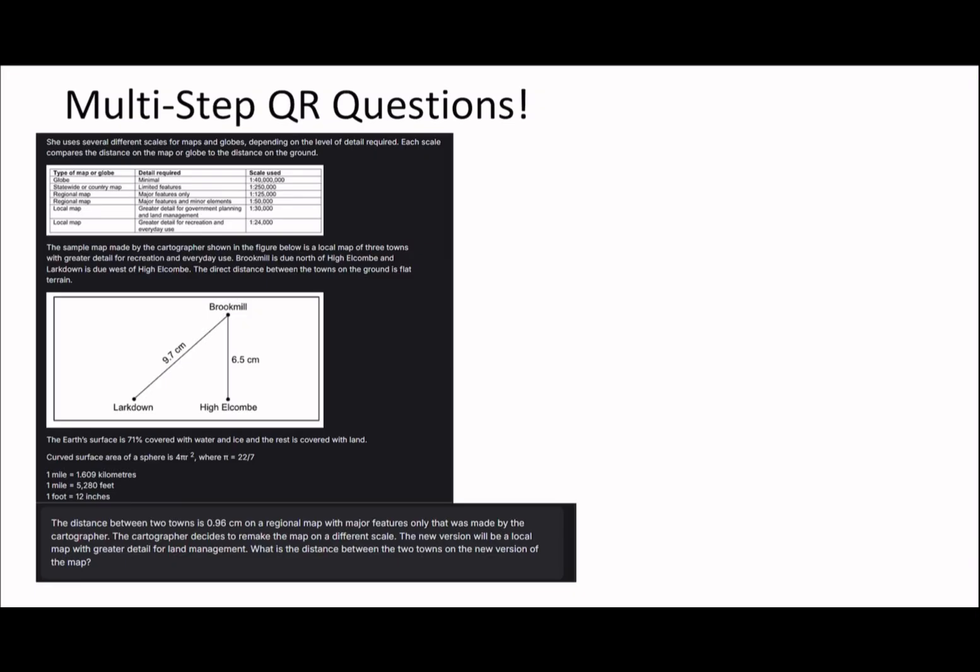This is a set that was sent in. The distance between two towns is 0.96 centimeters on a regional map with major features only that was made by the cartographer. The cartographer decides to remake the map on a different scale. The new version will be a local map with greater detail for land management. What is the distance between the two towns on the new version of this map? This seems complicated but it's dead easy. Let's take the key ideas. 0.96, regional map, major features only. The cartographer decides to remake the map on a different scale, the new version is local map with greater detail for land management. So we are looking for regional map with major features only and that's the scale used, 1 to 125,000.